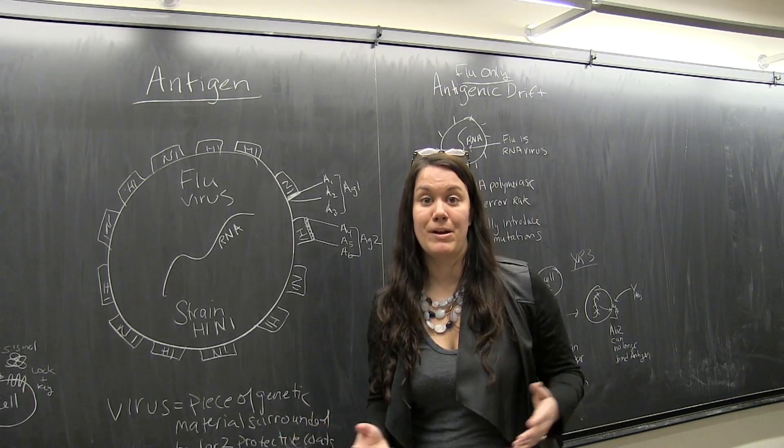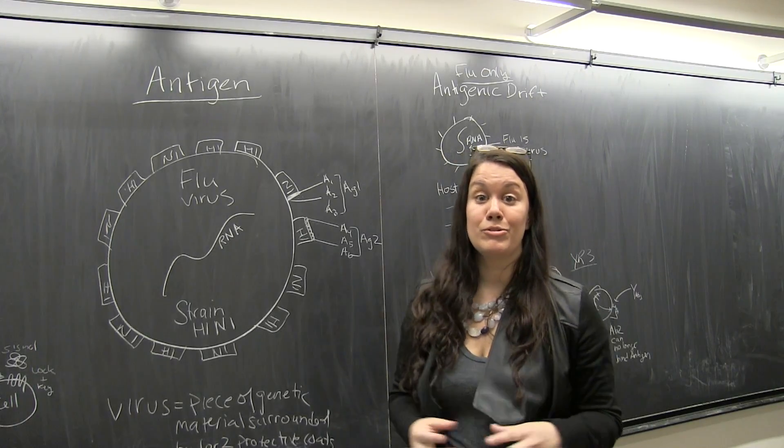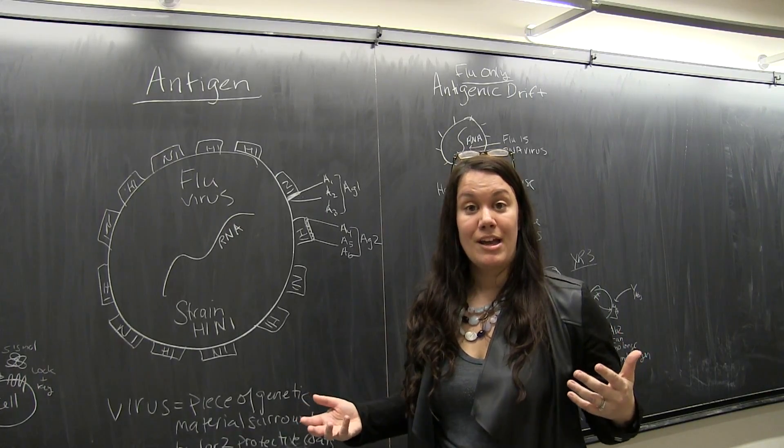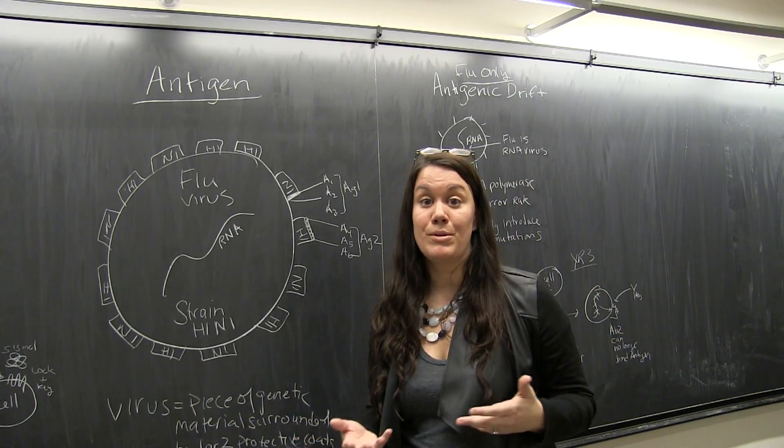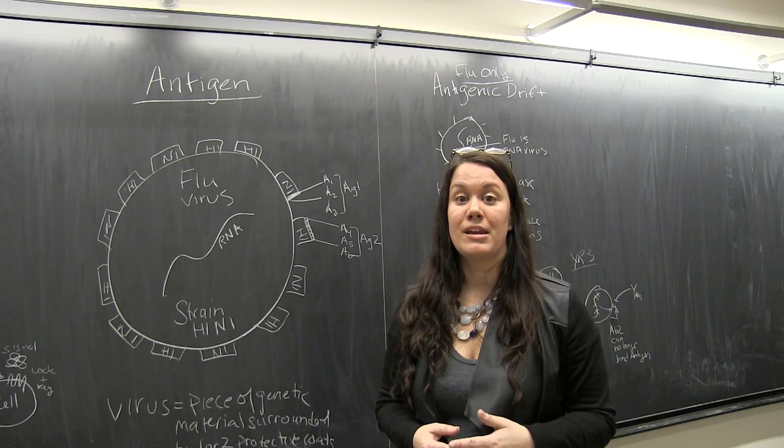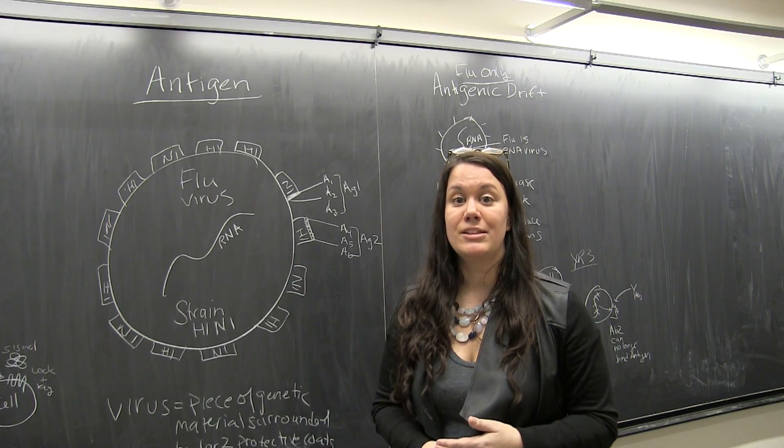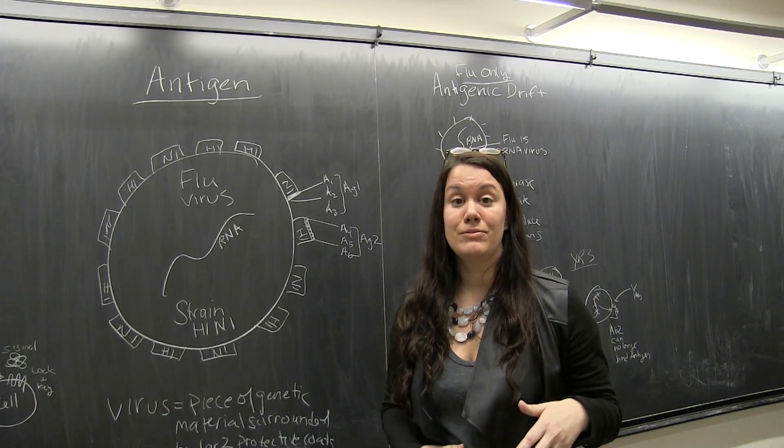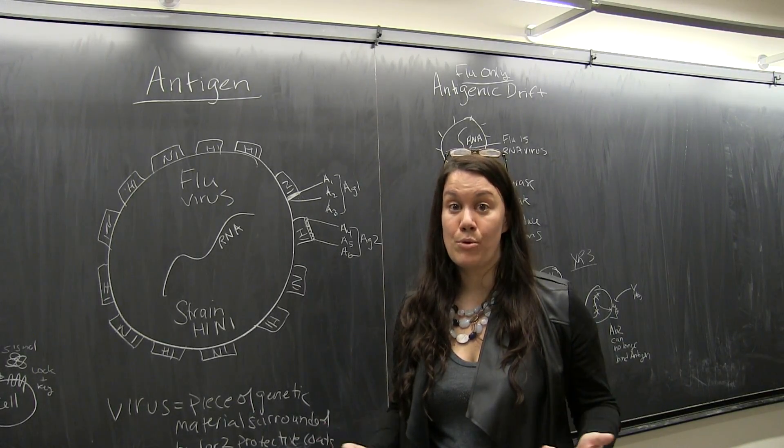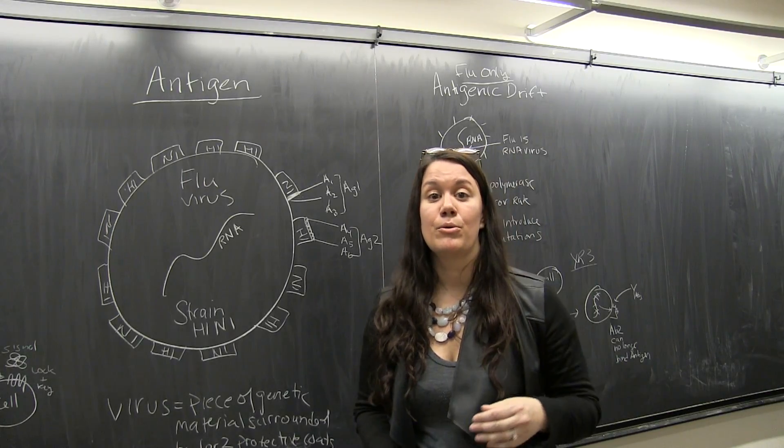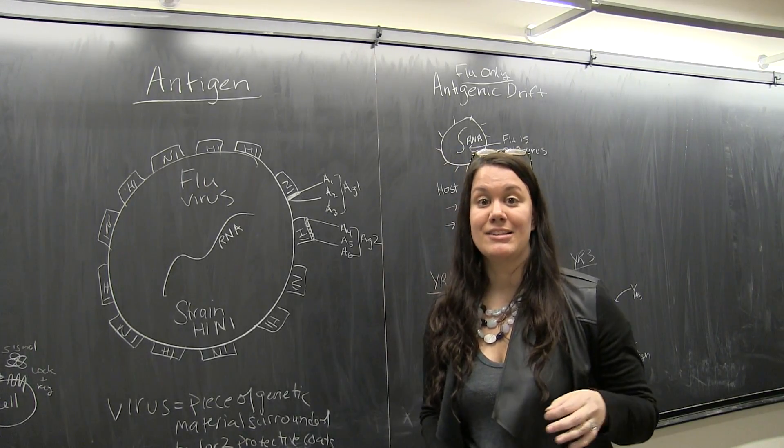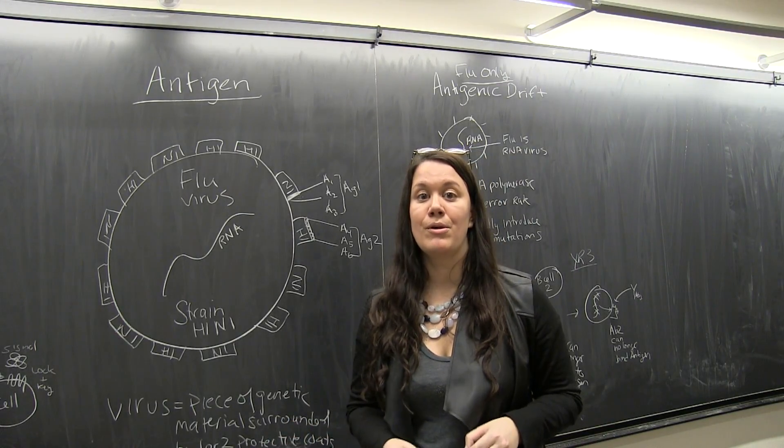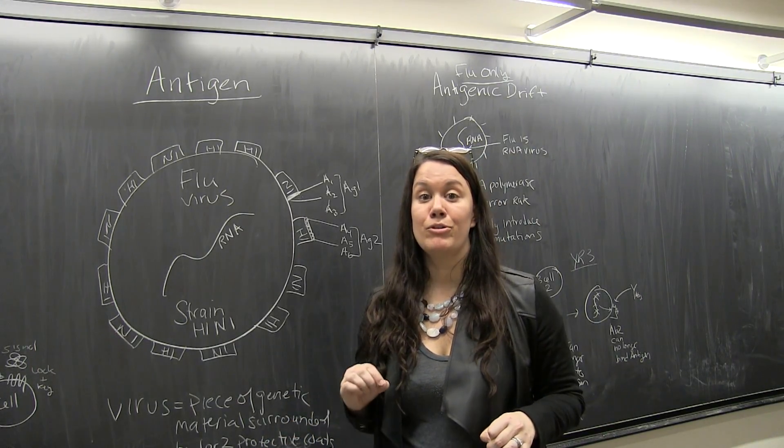So of course we can have dysregulation of the immune response where the immune response thinks that certain self pieces of the body are antigens when they shouldn't be. So when you have autoimmune disease, for example, that's when your immune response thinks that parts of your own body or parts of your cells are actually harmful and foreign, so they mount or stimulate an immune response against those what we call self antigens. But we don't want that situation. We only want our immune response to recognize things that are foreign and harmful.